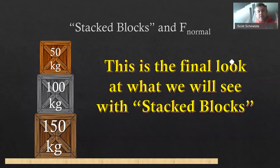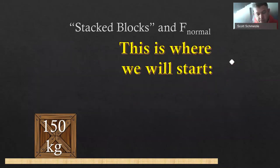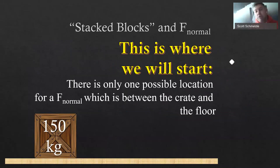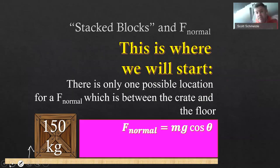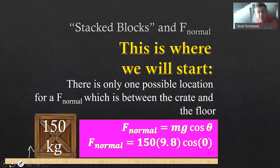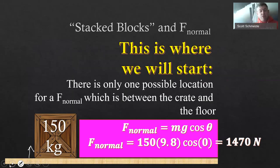Here's the final picture: three crates stacked on top of each other. We're going to work from the floor up, starting at 150 kilograms. There's only one location for our normal force — between the crate and the floor. Our normal force is mg·cos(θ). With only a 150-kilogram crate pushing down: 150 times 9.8 times cosine of 0 equals 1,470 Newtons. That's just the normal force for that one crate — nothing too different.